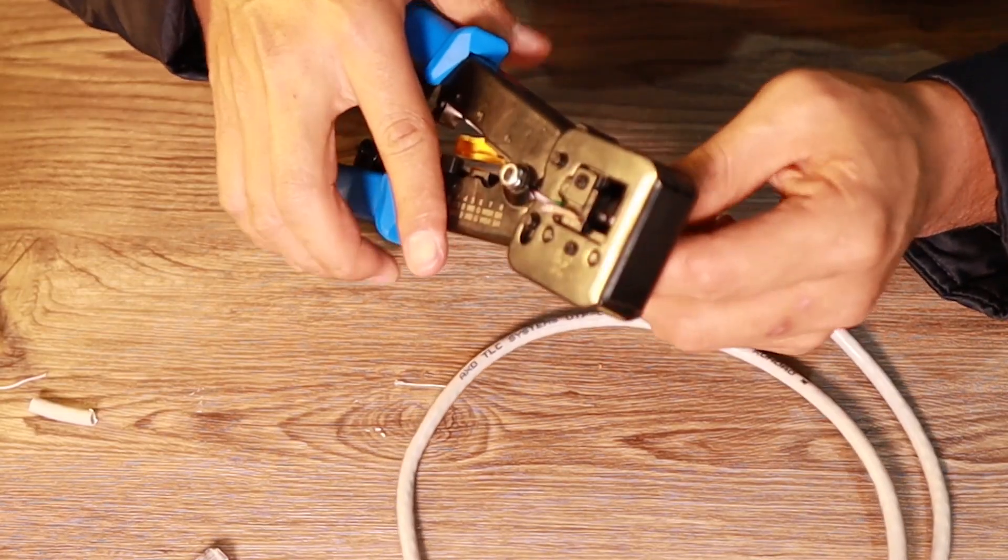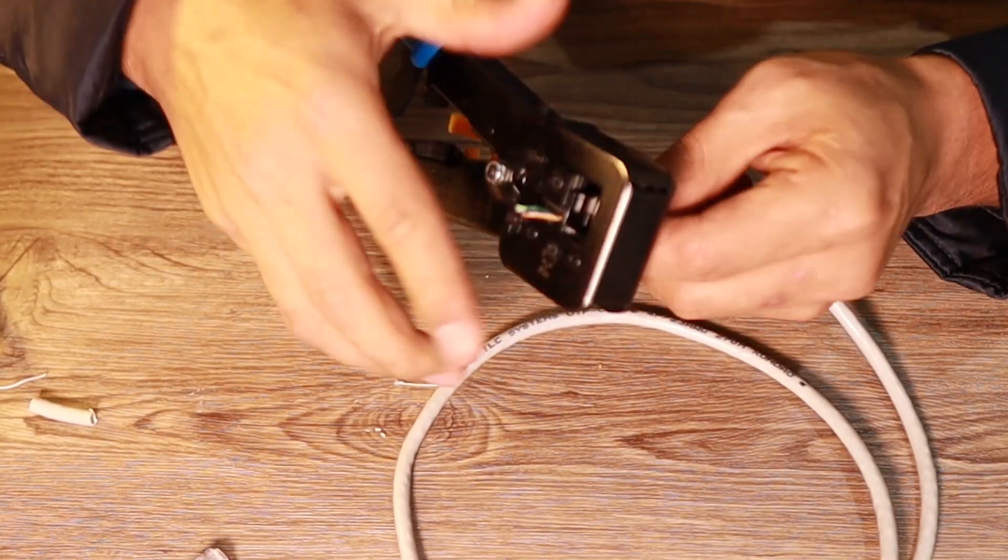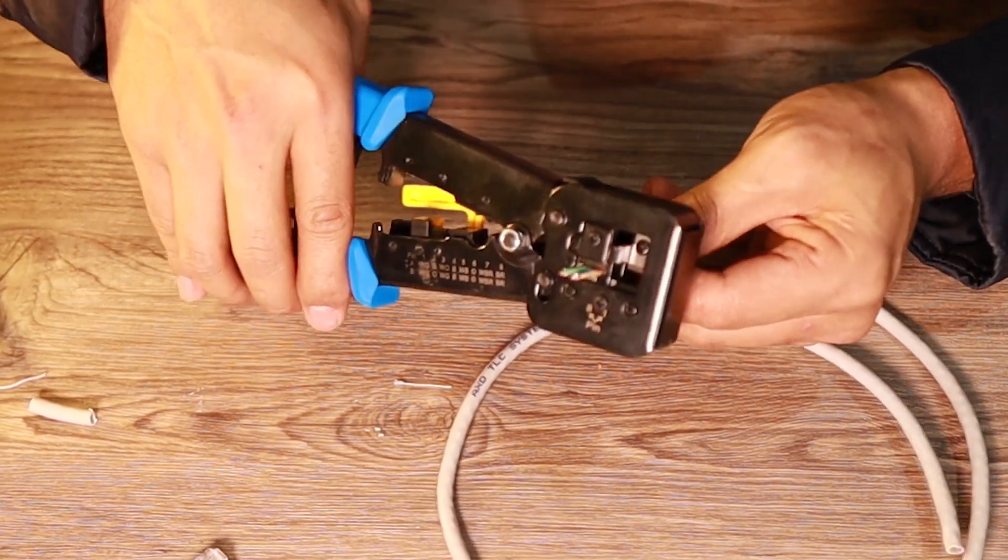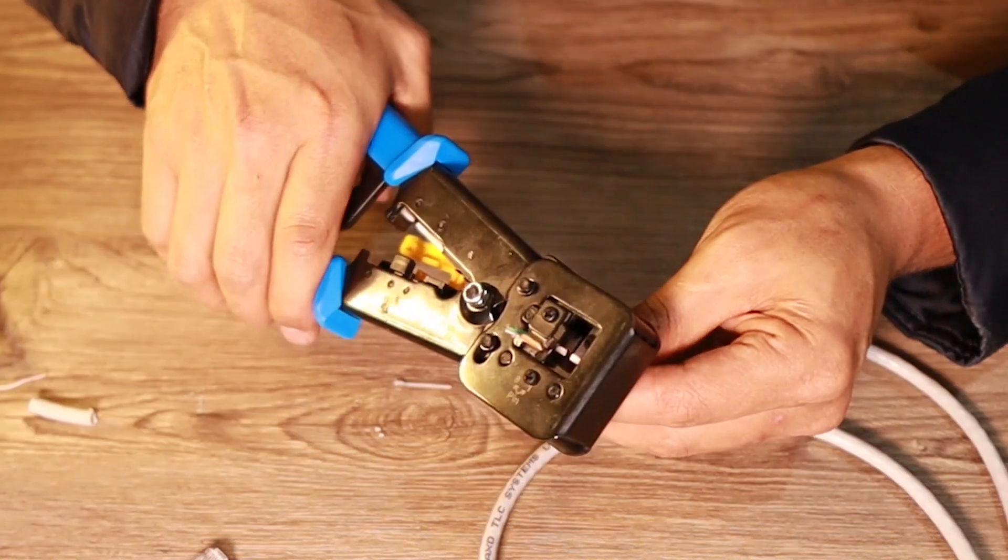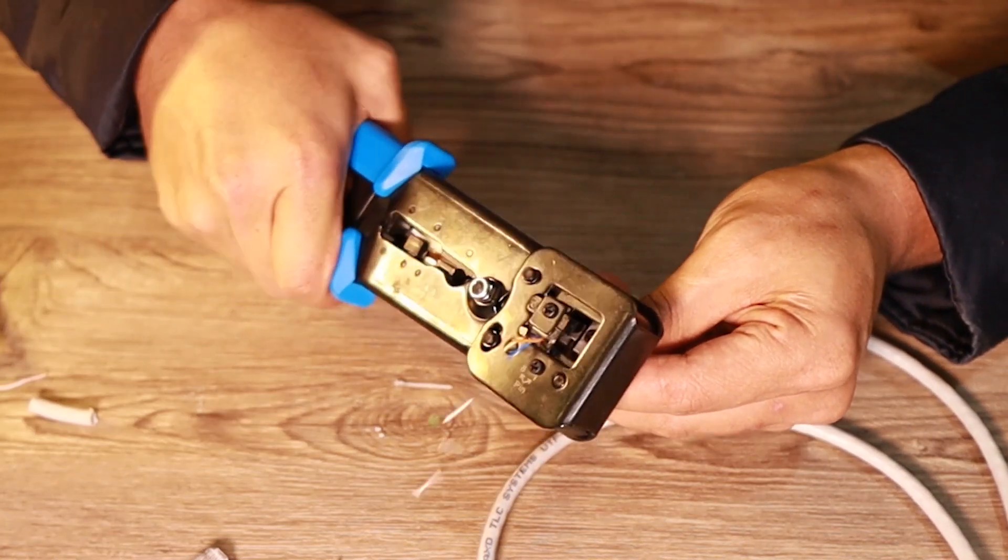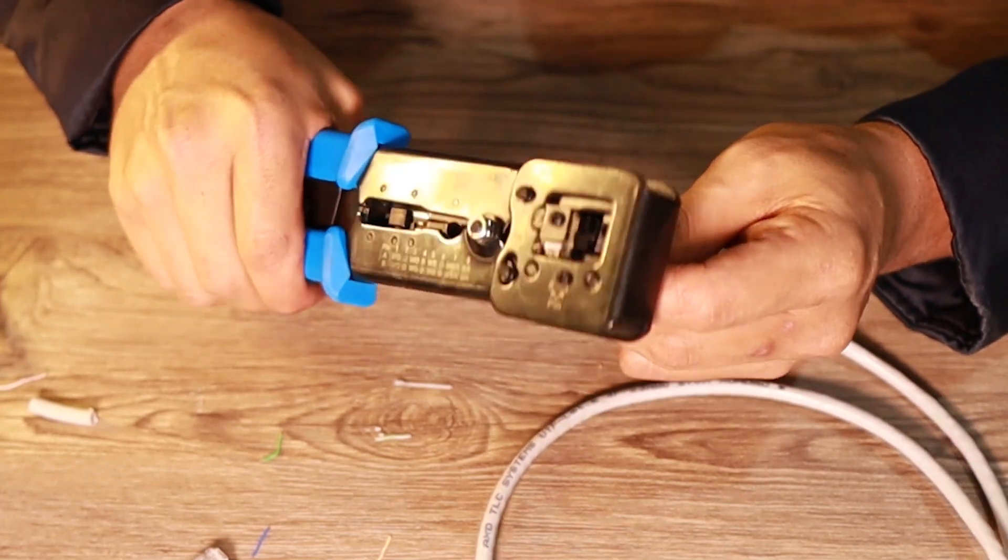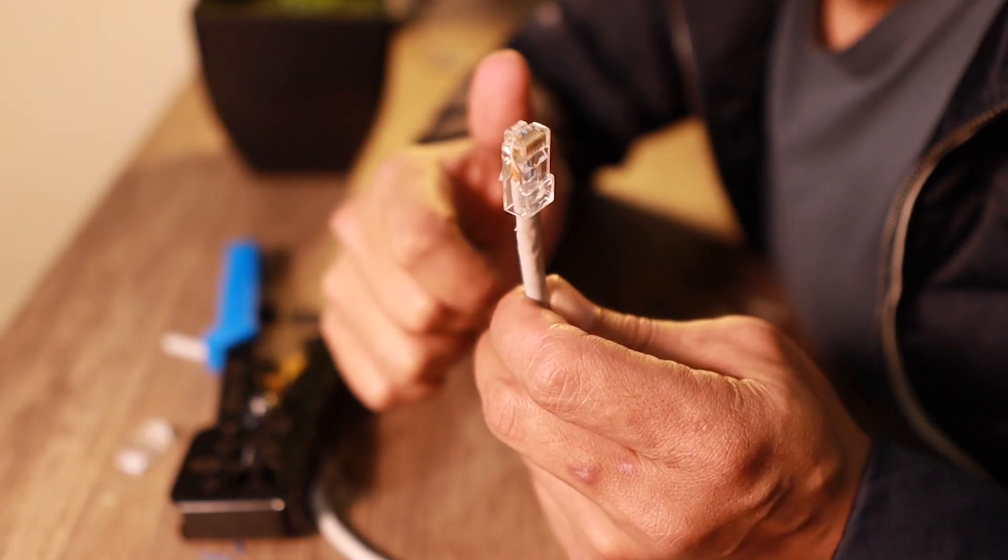So if I'm going to crimp this one already then it's going to cut off... there you go and you can see how clean it is.